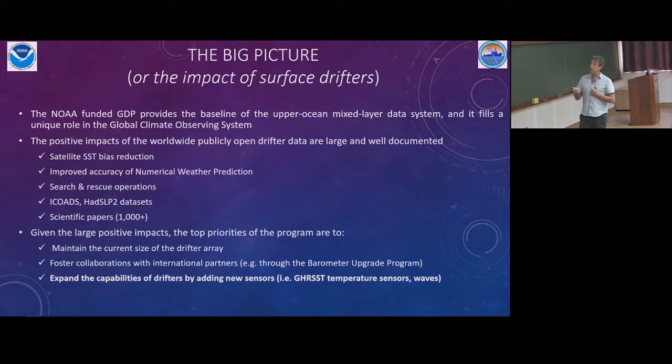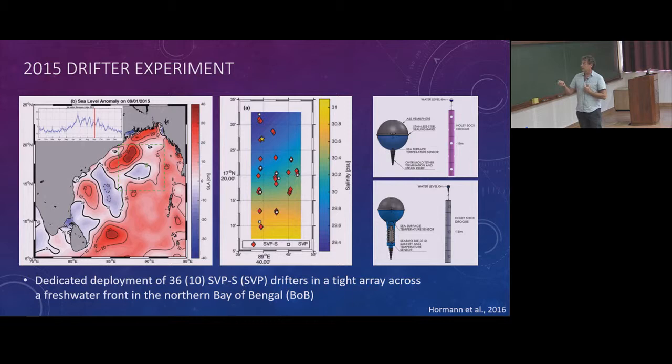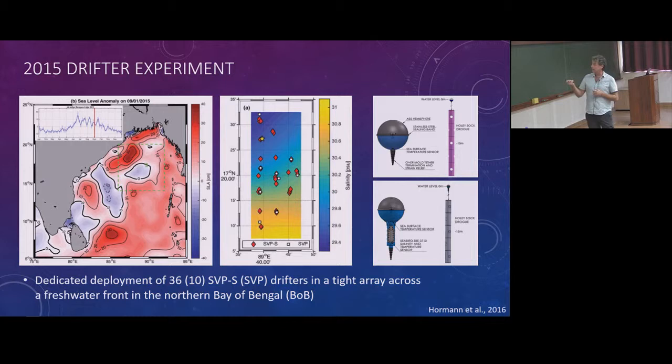Drifters look like that — imagine a surface buoy with a microcomputer inside and sensors: a thermometer to measure temperature, and sometimes a barometer to measure atmospheric pressure. For AZIRI, we had salinity sensors installed too, because one of the goals was to look at the spatial and temporal variability of sea surface salinity.